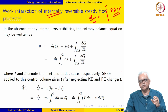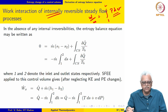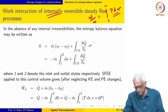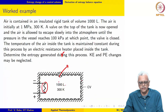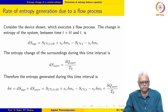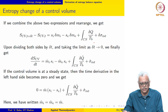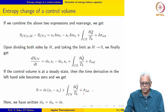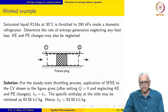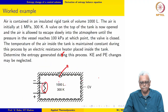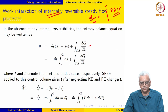Specifically, we consider reversible isothermal and reversible isentropic, both internally reversible. In the absence of any internal irreversibility, we may write the entropy balance equation for a steady flow situation. You may recall that the entropy balance equation for a steady flow situation, in the absence of any internal irreversibility, simplifies so that we end up with the reduced expression written here.